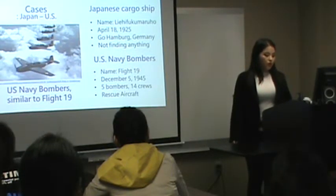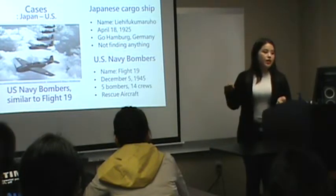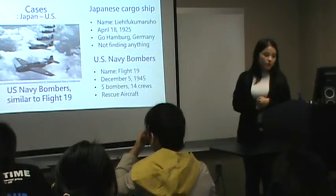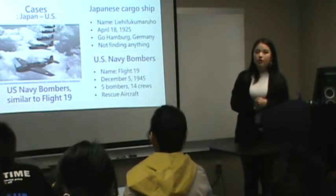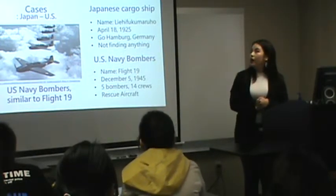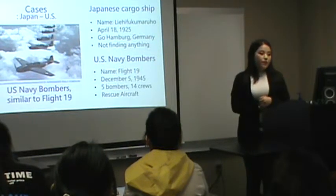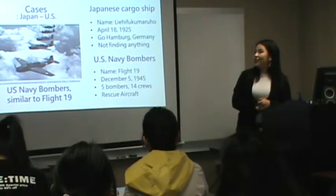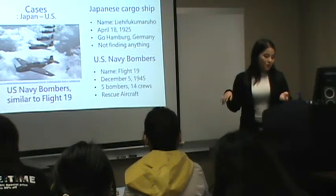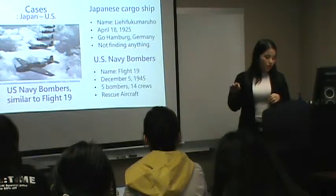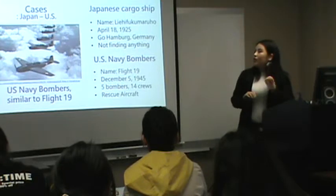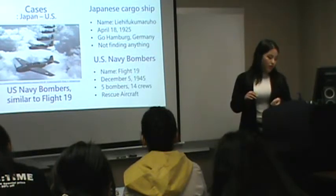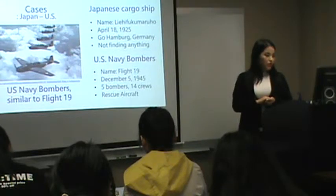Next, I want to explain some important cases. I will introduce cases from Japan and the United States. The first case is a Japanese cargo ship on April 18, 1925. The Japanese cargo ship Riau Fukumaru disappeared near Bermuda Island on its way to Hamburg. They couldn't find any crew's body or any fragment of the ship.